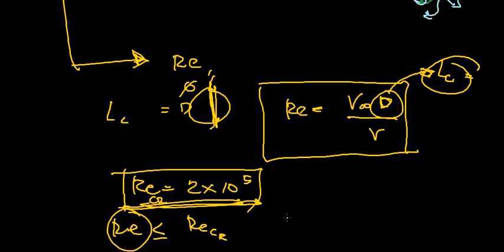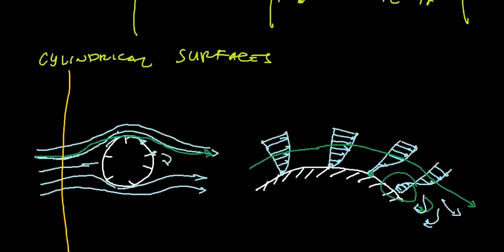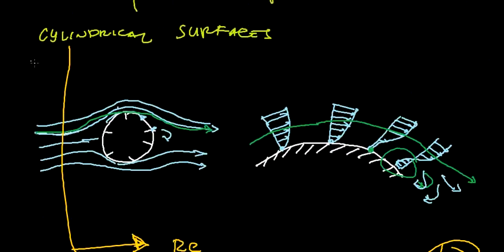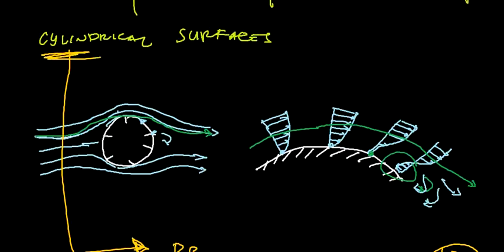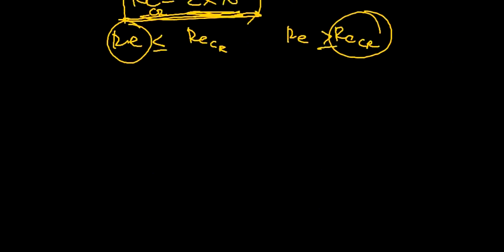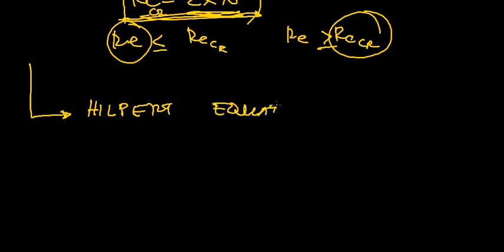So aside from the Reynolds number, another important thing that we must study regarding this cylindrical surface is what we call the Hilpert equation.